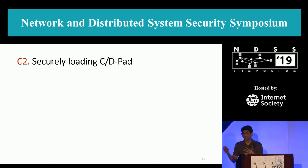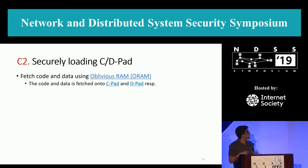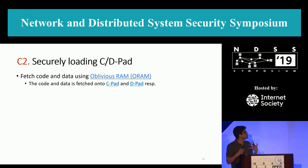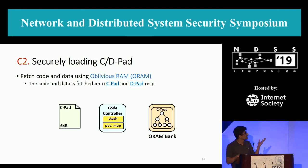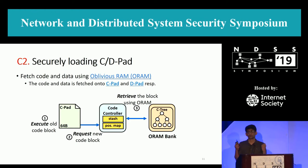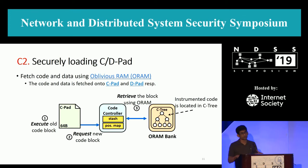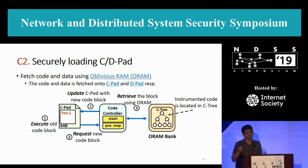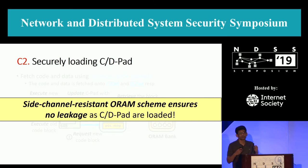Now that code blocks can be loaded onto the CPAD, the second part is actually loading them onto the CPAD or DPAD. For this, you use a cryptographic primitive called oblivious RAM (ORAM). You have the CPAD, the code controller, and the ORAM tree. You execute the old code block, then request a new code block from the code controller, which retrieves the code block using ORAM. ORAM ensures there is no access pattern leakage. The instrumented code is located inside the ORAM tree, and then the CPAD is updated with the new code block. This side-channel-resistant ORAM scheme solves challenge C2.